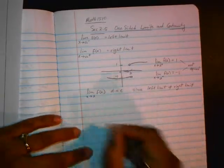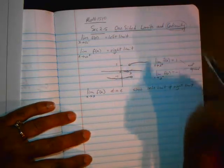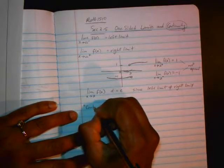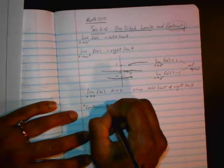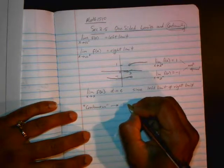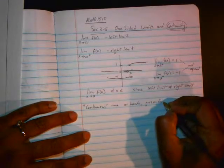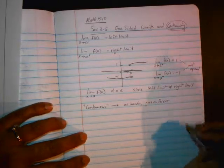In the worksheet that you'll be seeing shortly, you'll learn how to sketch the graph of a piecewise function and evaluate left and right hand limits. The next part of the section is that of continuity. A function f of x is continuous if it satisfies certain conditions. Before we get to that, let's think about what the word continuity means in English. For something to be continuous, as you know, there's no breaks. It goes on forever.